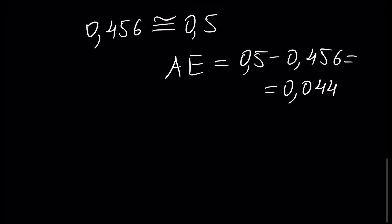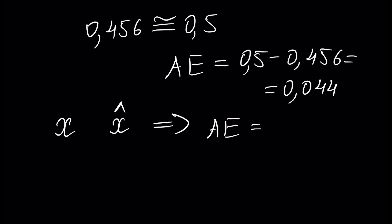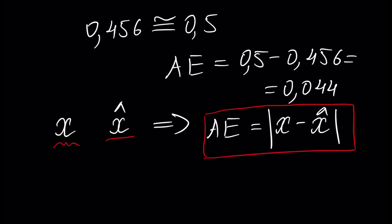In the general case, using notation: assume we have a number x and we calculated an approximation of this number. The absolute error is the absolute value of x minus the approximation, because the approximation can be greater or smaller than our initial number. If we write x minus approximation, this number can be positive or negative, but if we write the absolute value it will always be positive. If you don't know what an absolute value is, watch the beginning of the algebra playlist.